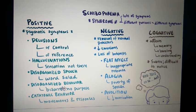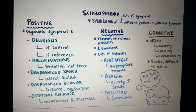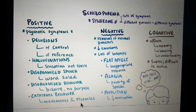Disorganized or bizarre behavior is another positive symptom, where the patient's behavior has no purpose — for example, wearing heavy sweaters in the middle of summer. There is also catatonic behavior, where movements and responses to external stimuli are markedly different or exaggerated. These are some of the positive symptoms seen in schizophrenic patients.